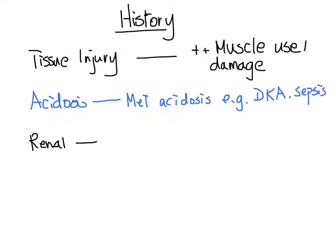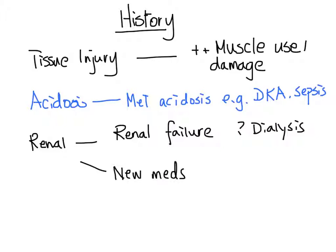For renal causes, we need to know whether the patient has a history of renal failure. And for chronic renal failure patients who are on dialysis, whether they have missed any sessions. For medications, we need to ask about new medications, specifically ACE inhibitors, angiotensin II receptor blockers, and spironolactone. These are the main history items we want to ask.